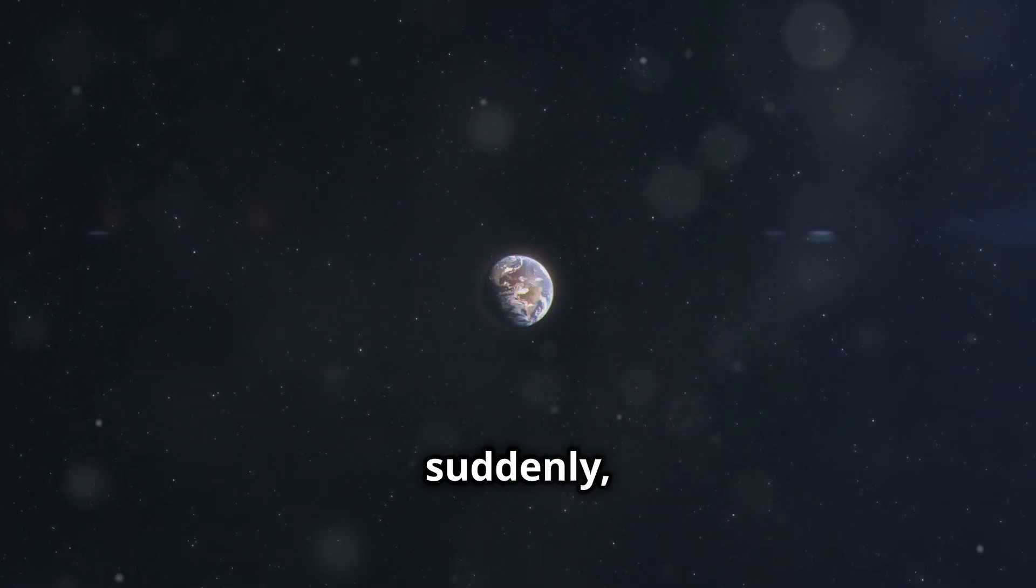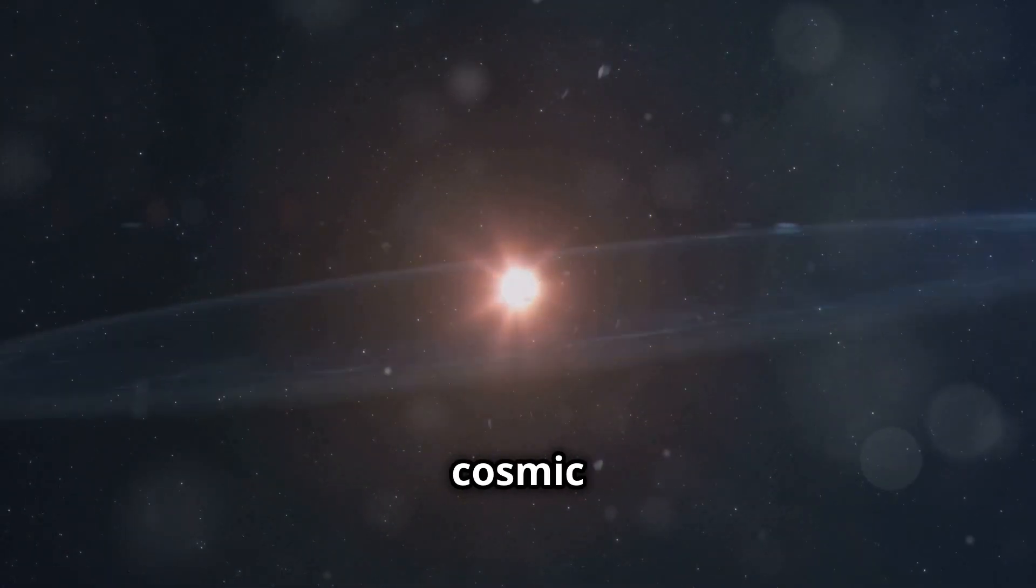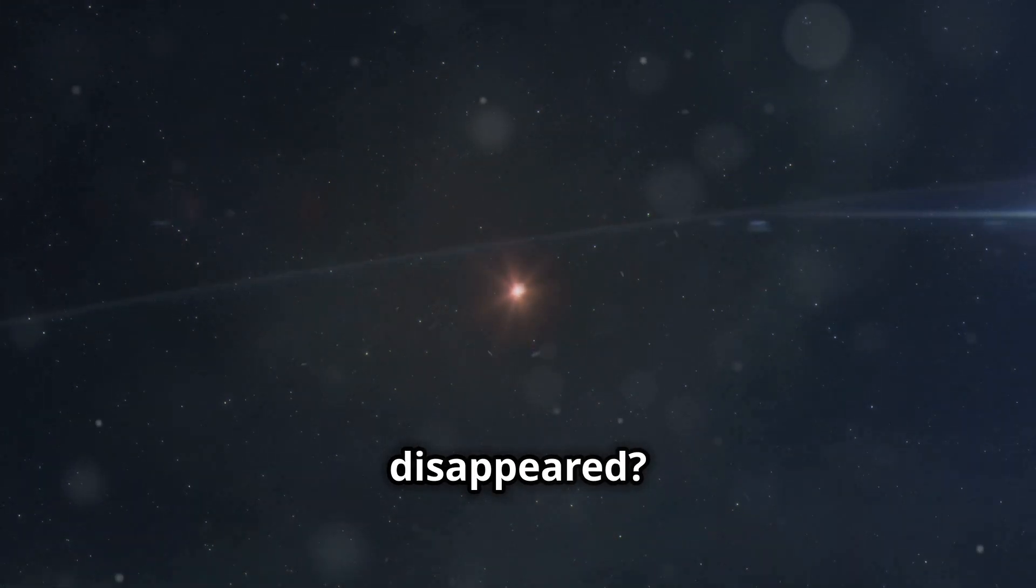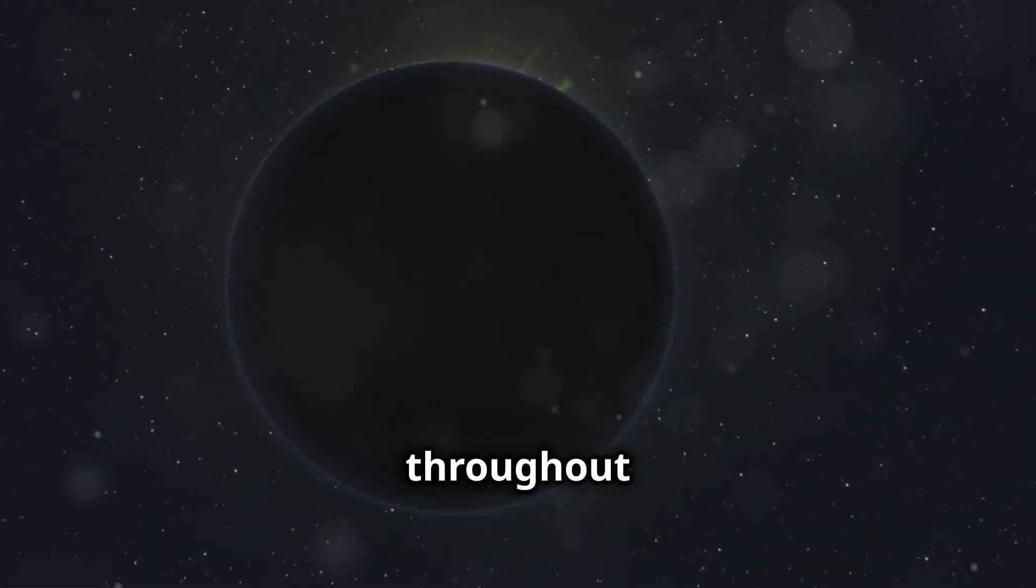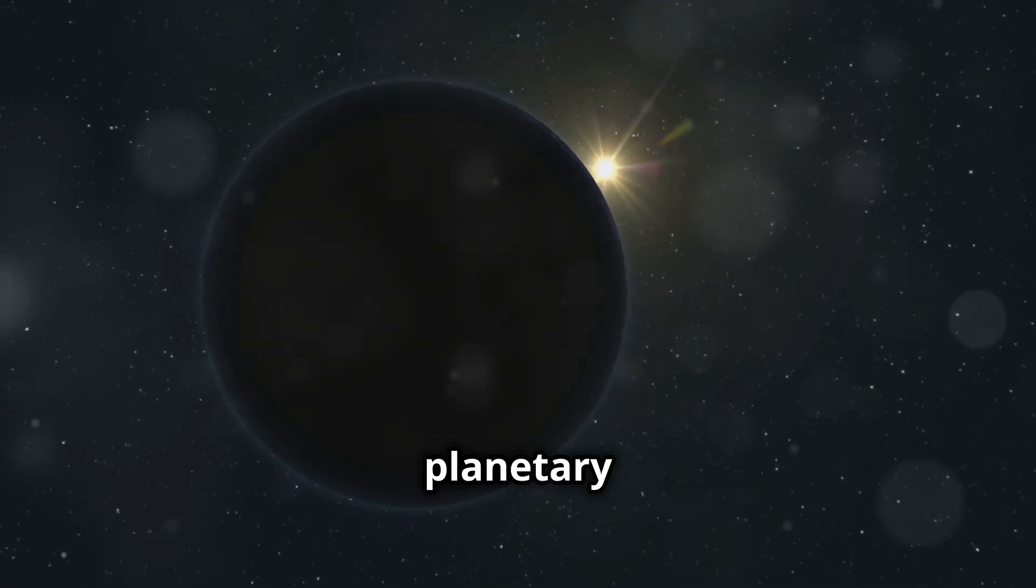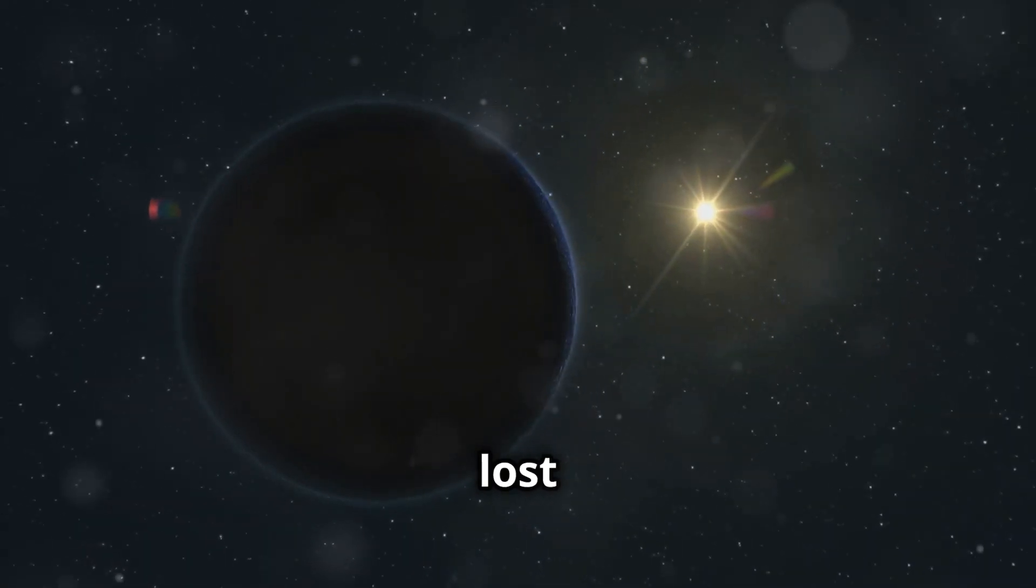Now, imagine if suddenly one of the dancers in this cosmic ball simply disappeared. The disappearance of a single planet would cause a huge stir throughout the solar system, messing up planetary orbits as if the square dance had lost its rhythm.